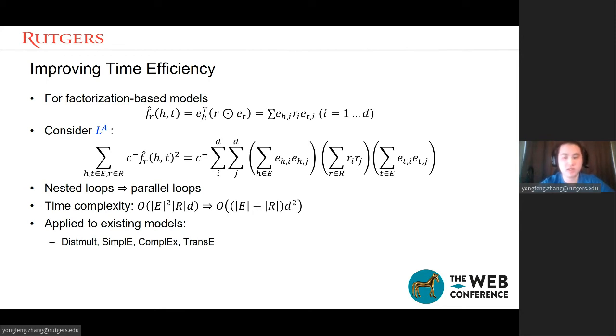A typical form of scoring function is the inner product or the sum of head entity embedding vector, tail entity embedding vector, and the relation embedding vector. Or the scoring function may be the sum of the inner product. If the scoring function looks like this, we can rewrite the LA part as this. We can see after we rewrite the LA, the nested loops become the parallel loops. The time complexity, of course, becomes much smaller. It is only E plus R times D squared. Since we know that the dimension of the vector is much smaller than the set of entities and relations, it's a much better improvement on time complexity.